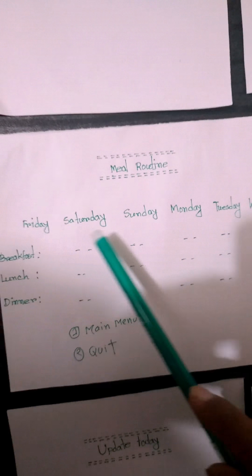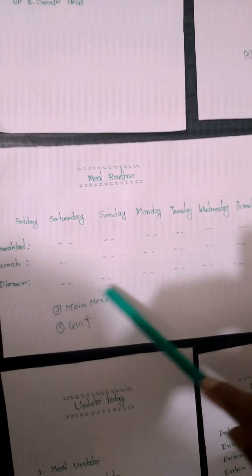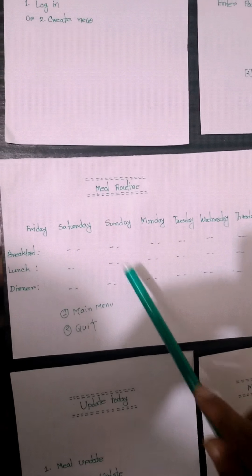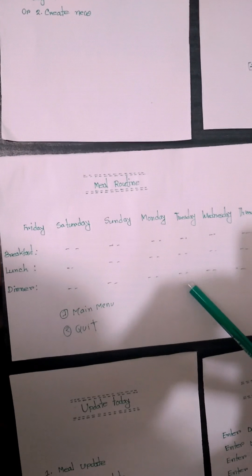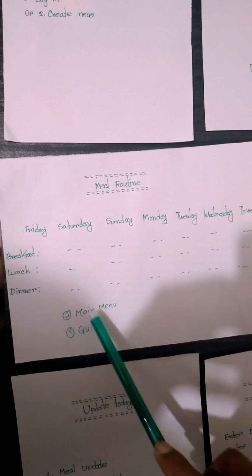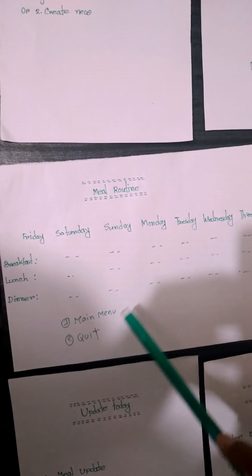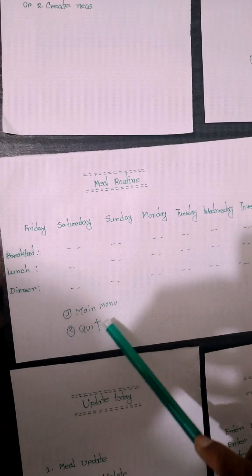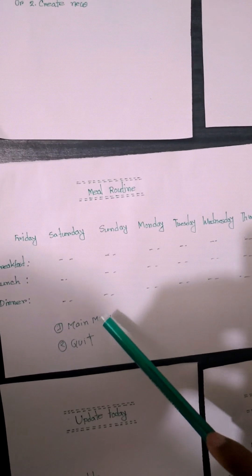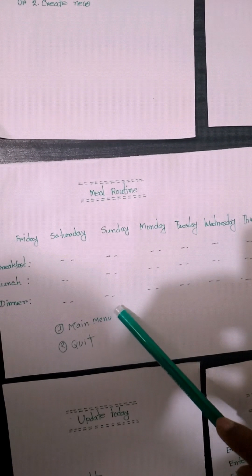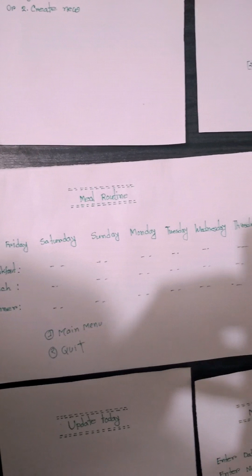Here we see the meal routine for seven days, covering lunch, dinner, and breakfast. We also see a main menu option and a back option. If we press on, then we go back to the main menu page.